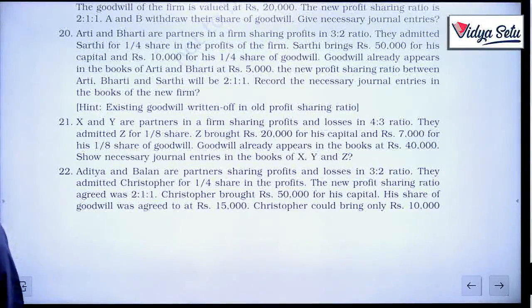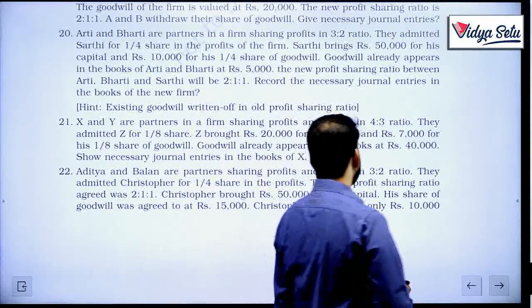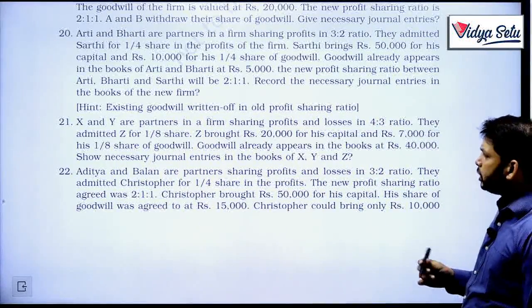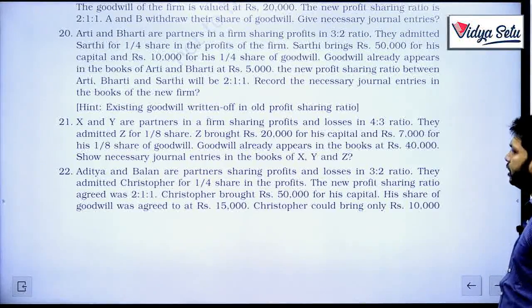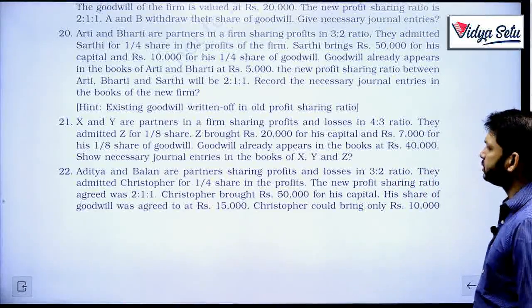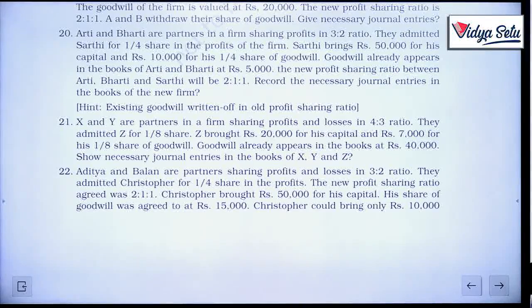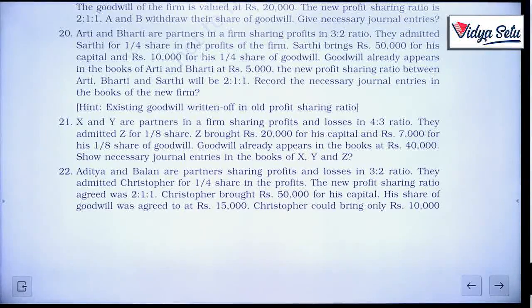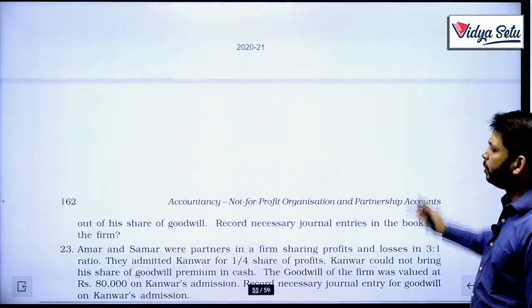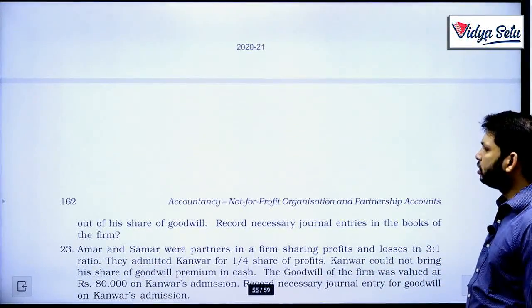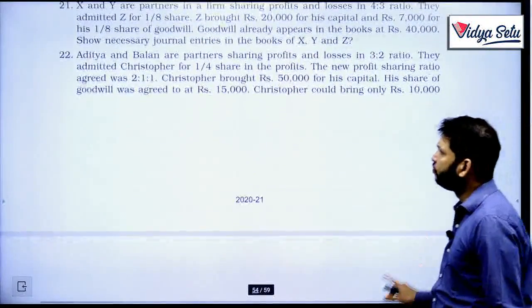Let us look at question number 22. Aditya and Balan are partners sharing profits and losses in the ratio of 3 to 2. They admitted Christopher for one-fourth share in the profit. Christopher brought 50,000 as his capital. His share of goodwill was agreed at 15,000. Christopher could only bring 10,000 out of this 15,000, so 5,000 will be from his current account or capital account. Record necessary journal entries in the books of the firm.